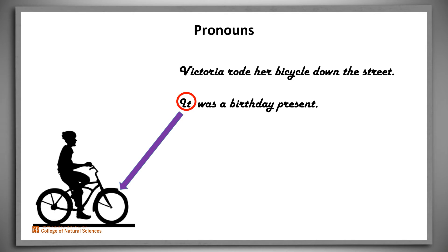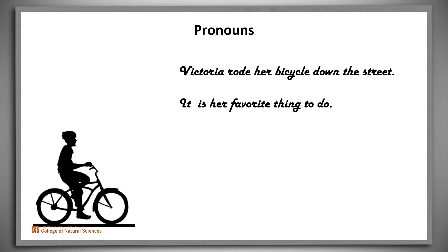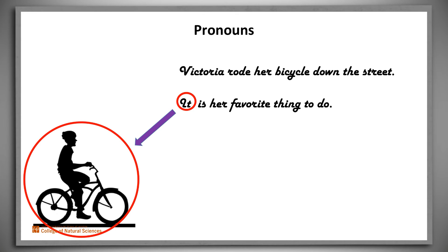But let's change the second sentence slightly and see how our answer changes. 'It was crowded.' Again, what is the antecedent of 'it'? Now the answer seems equally obvious — it must be the street. And let's try a third one: 'It's her favorite thing to do.' Now the antecedent of 'it' is the act of bicycle riding.